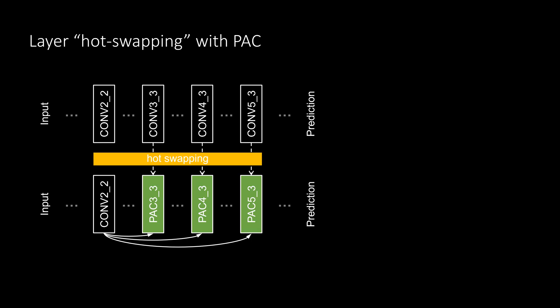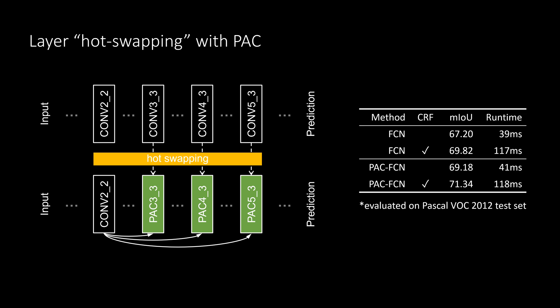We also propose a way to use PAC to easily leverage existing architectures and pre-trained models, which we call host swapping. Given a pre-trained network, host swapping directly replaces some conv layers with their PAC counterparts and retains the pre-trained weights as initialization before further fine-tuning. We show that host swapping can bring consistent performance improvements for semantic segmentation while adding minimal computation.